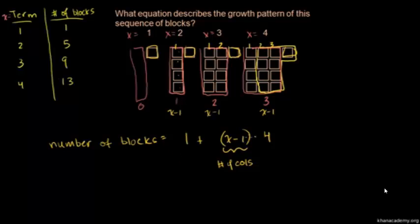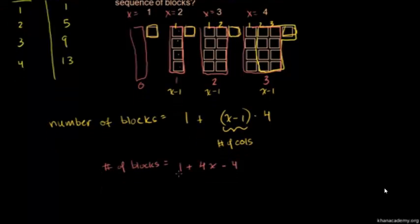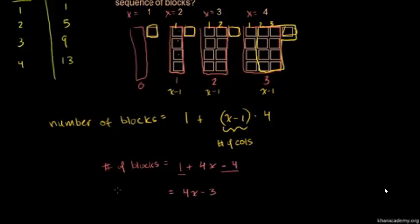Let me simplify this. If I multiply four times (x minus 1), I get: number of blocks equals 1 plus 4 times x minus 4. Distributing: 4 times x is 4x, and 4 times negative 1 is negative 4. Then we have 1 minus 4, which gives us 4x minus 3. So 4x minus 3 is the number of blocks given our term x. If we're on term 50, it's 4 times 50, which is 200, minus 3, which is 197 blocks.